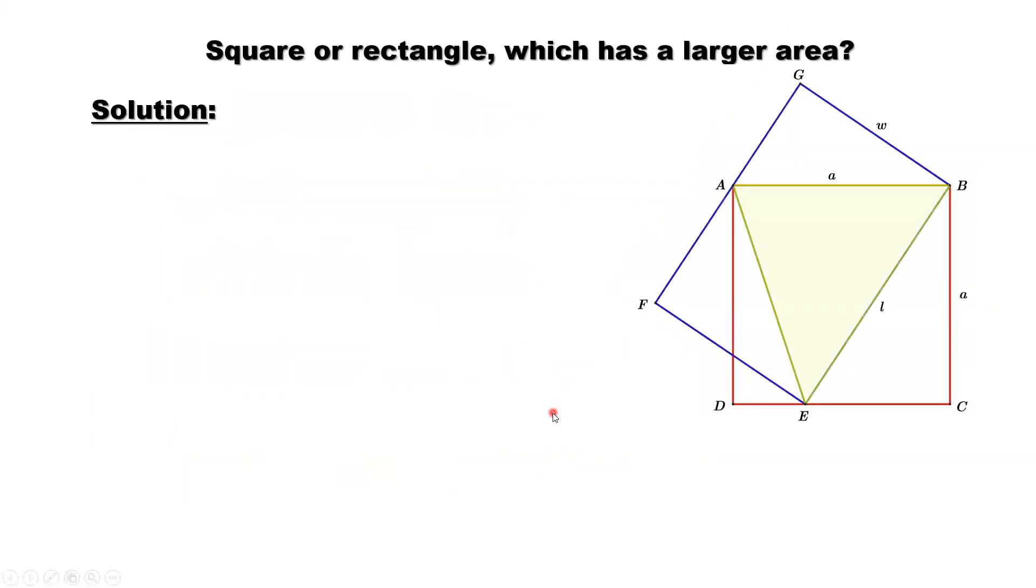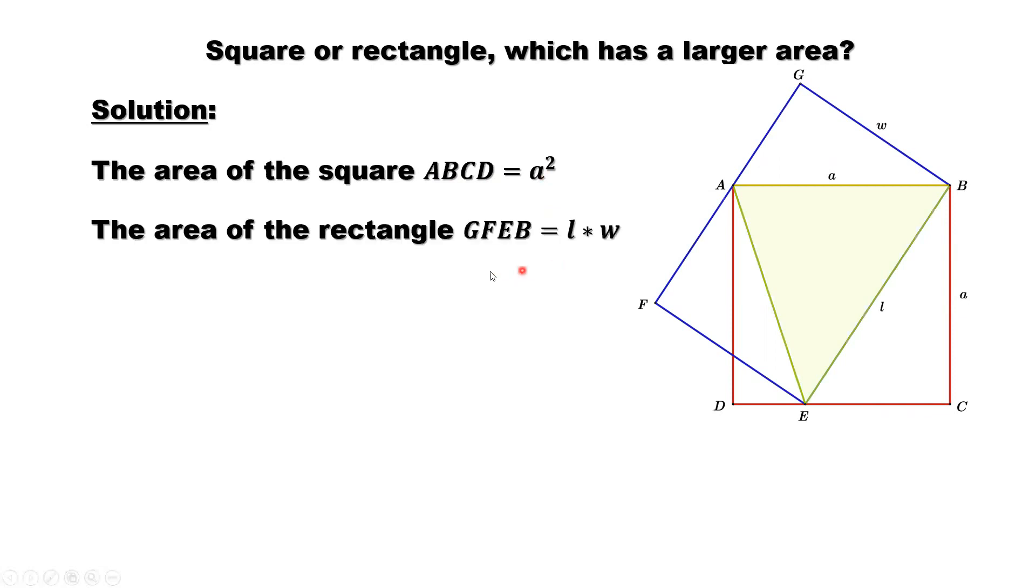We assume the size of the square is A by A. The size of the rectangle is L by W. So the area of the square ABCD equals A times A, which is A squared. The area of the rectangle GFEB equals L times W.